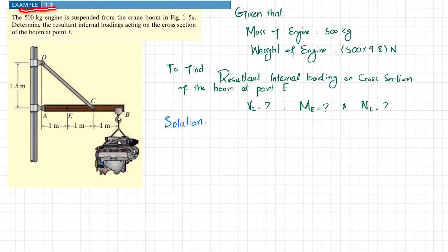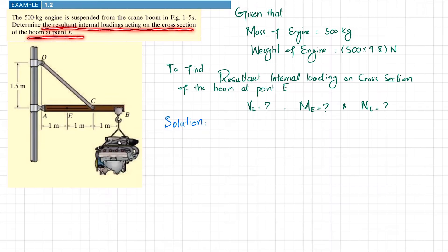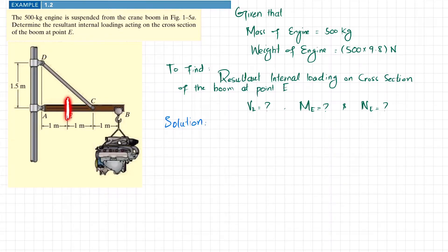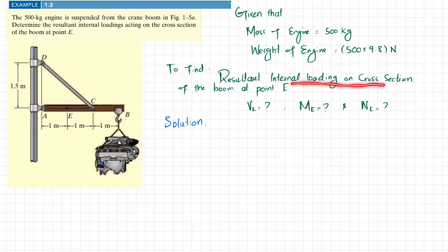Welcome back — Example 1.2. This problem is being solved on the request of a student. The given data is that a 500 kg engine is suspended from a crane boom. We need to determine the resultant internal loading acting on the cross section of the boom at point E — specifically the shear force, moment, and horizontal reaction force at point E.